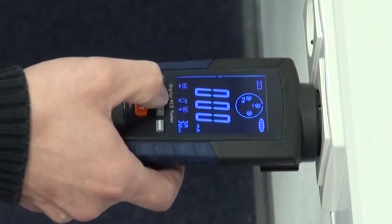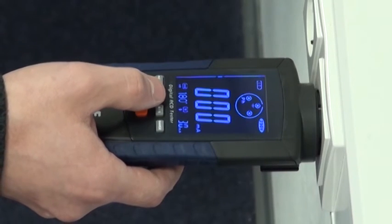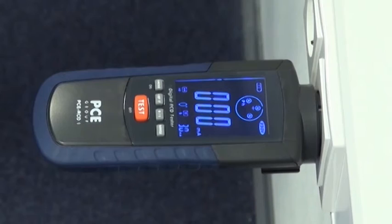It has to be set if the testing current should start with the positive or negative half wave of the voltage. This is important because different FI circuits react differently.